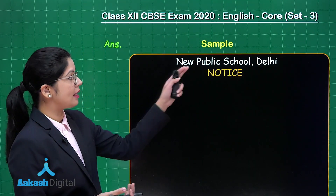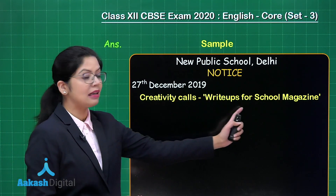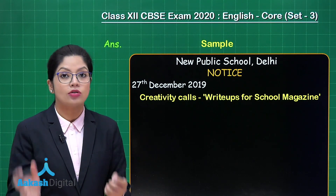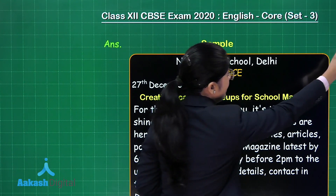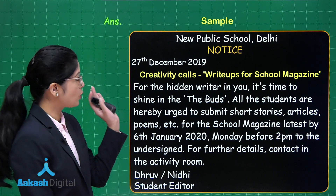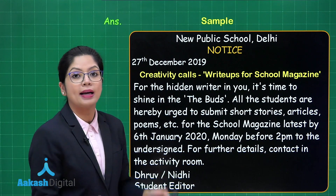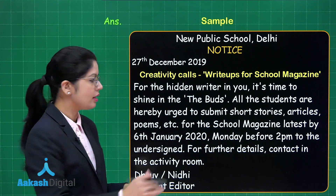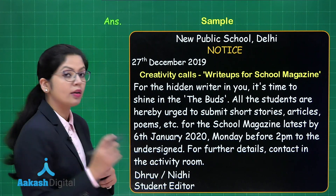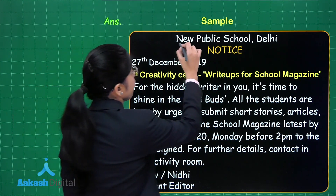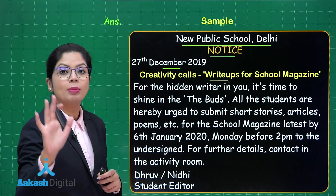As far as the template goes, I begin with the name of the school, then write the word 'notice.' On the left-hand side comes the date, and in the middle, write a catchy heading so that the notice is attractive enough, followed by the content of the notice, ending with the name and designation of the concerned person. Reading it simply: the heading reads 'Creativity Calls — Write-ups for School Magazine.' The purpose of the notice is highlighted. Once you have written the name of the organization, the word 'notice,' date, and heading, the format is complete.